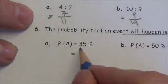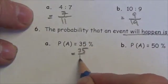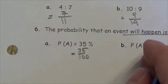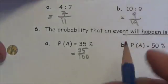This is written as a chance, 35 out of 100. So 35 out of 100, if we simplify that, we're going to get 7 out of 20.